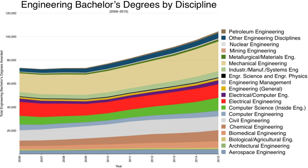Engineering education is the activity of teaching knowledge and principles to the professional practice of engineering. It includes an initial education, and any advanced education and specializations that follow. Engineering education is typically accompanied by additional post-graduate examinations and supervised training as the requirements for a professional engineering license.